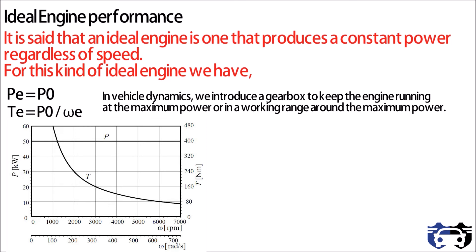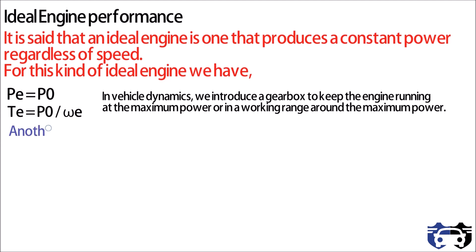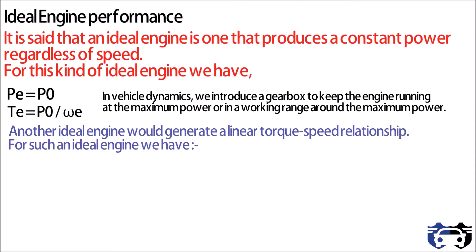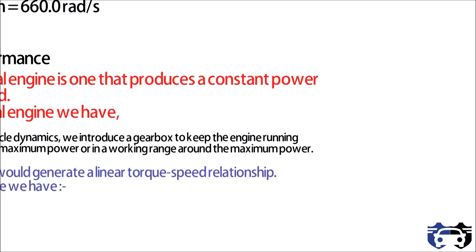Another case of an ideal engine assumes a linear relationship between torque and speed. For such an engine, torque equals ce multiplied by omega e, where ce is a constant, which gives pe equals ce multiplied by omega e squared.